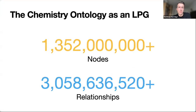You may be wondering how large the chemistry ontology is when converted to our labeled property graph mapping. The labeled property graph contains over 1.3 billion nodes linked by around 3 billion relationships. Neo4j can handle this representation of the chemistry ontology with our chosen mapping, and it seems responsive enough for browsing and editing — and I'll remind you that this ontology is three orders of magnitude larger than anything we've ever dealt with before.